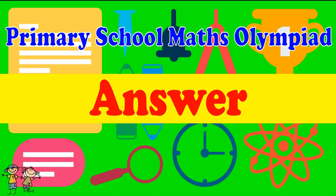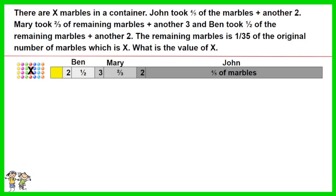Here is the recommended answer. Let's illustrate the distribution of marbles into a diagram, starting from the right with John taking four-fifths of the marbles plus another 2, then Mary took two-thirds of remaining marbles plus another 3, and Ben took half of remaining marbles plus another 2. The remaining marble in the container is 1/35 of the original number of marbles.